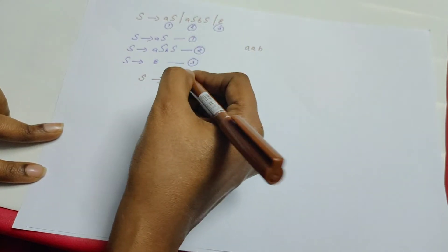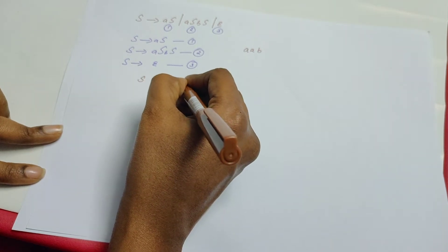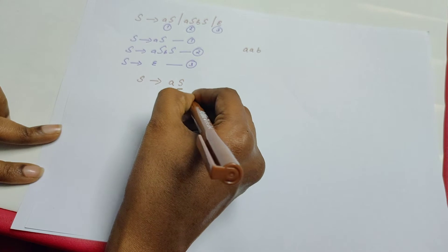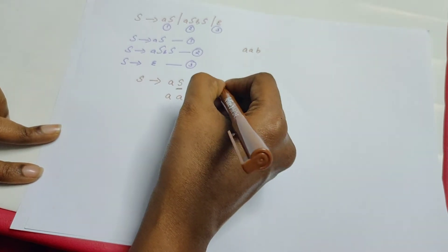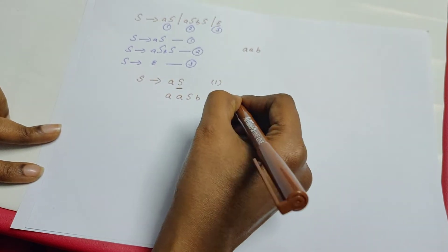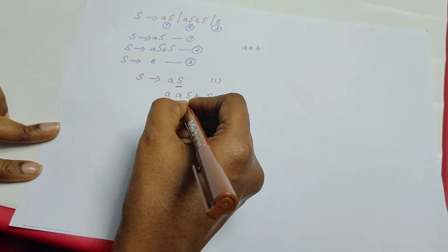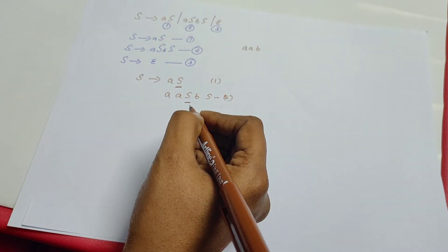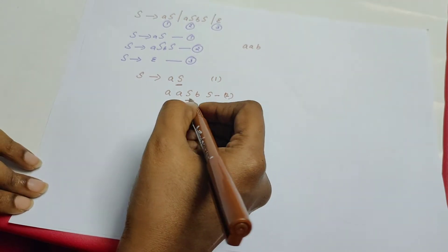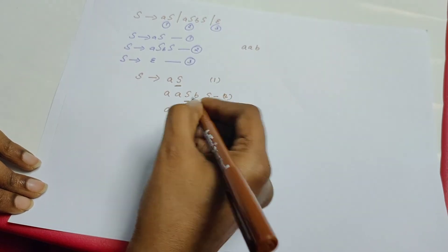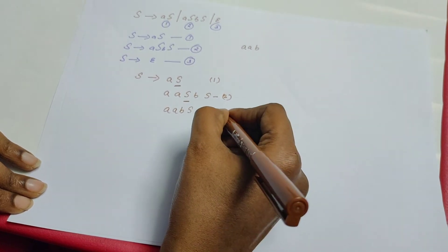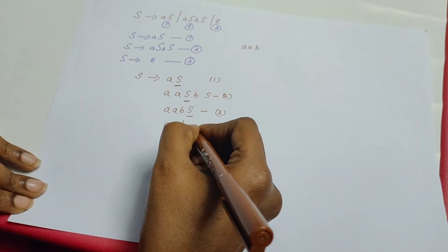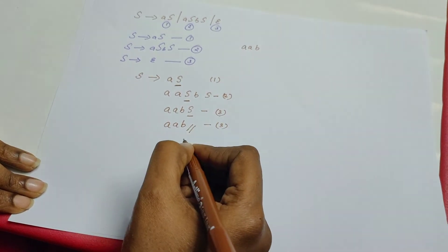S derives — choosing the very first rule — AS. Now there is one and only variable which is S. This S could be replaced by ASBS, which is rule number 2. Now there are two variables. Among the two, let me choose the leftmost one. In the derivation process, if we always choose the leftmost variable for further derivation, then it is leftmost derivation. Now I replace this S by epsilon, applying rule number 3 — this S vanishes. There is only one variable left. Let me replace that S also by epsilon. So we have obtained the string AAB. The rules applied were: 1, 2, 3, 3.